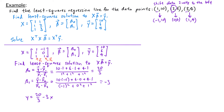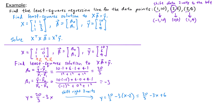To get the regression line for the original data set, I shift the line back 2 units to the right: y equals 20/3 minus 3(x - 2), which simplifies to 20/3 minus 3x plus 6, giving y equals 38/3 minus 3x.